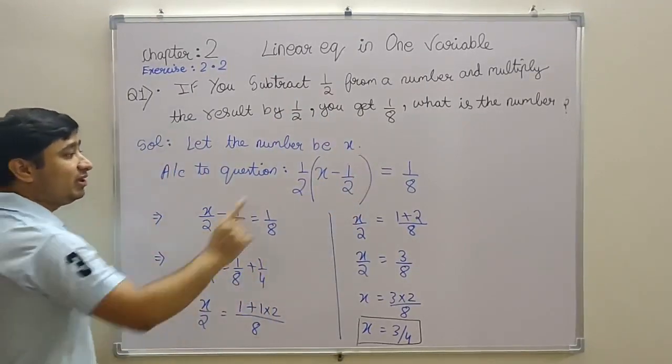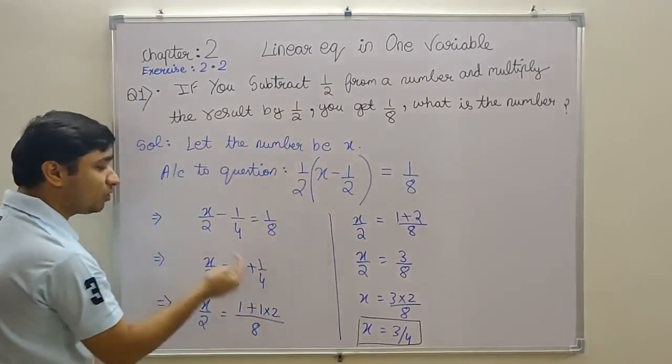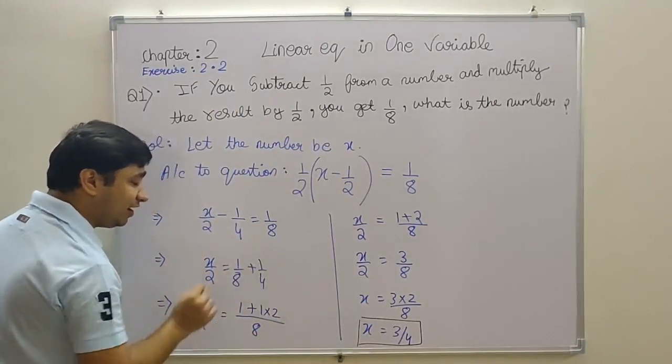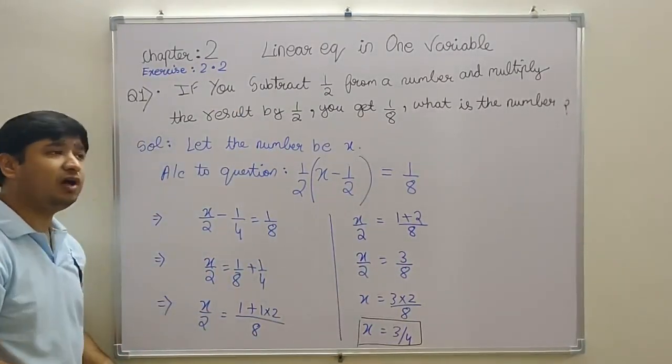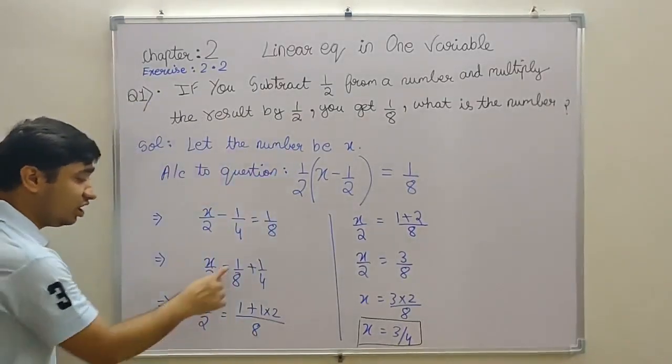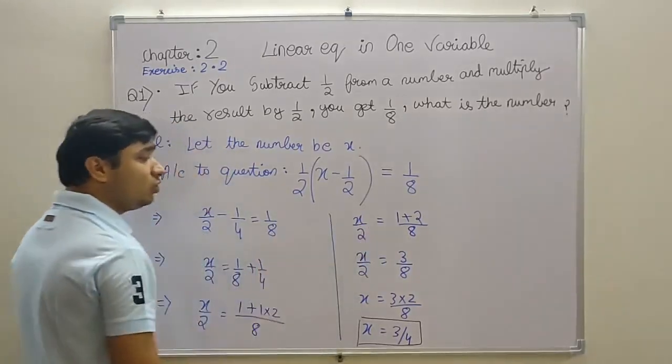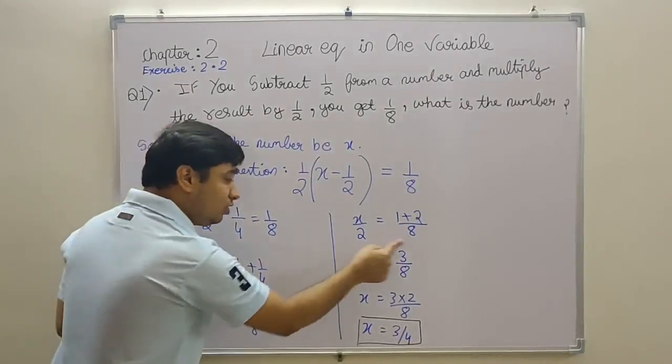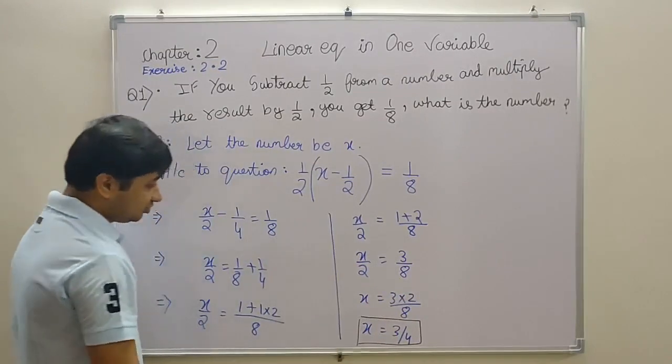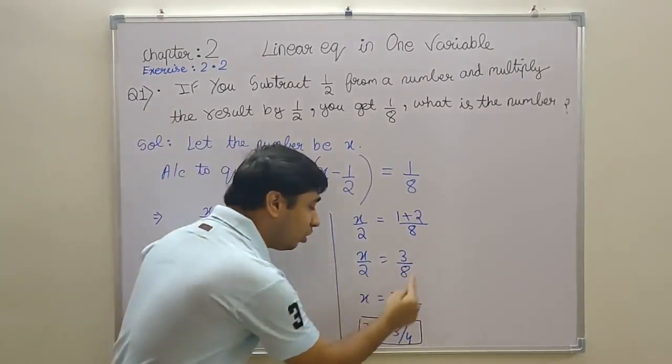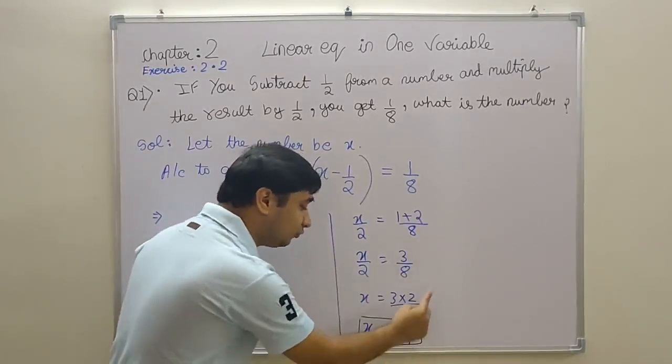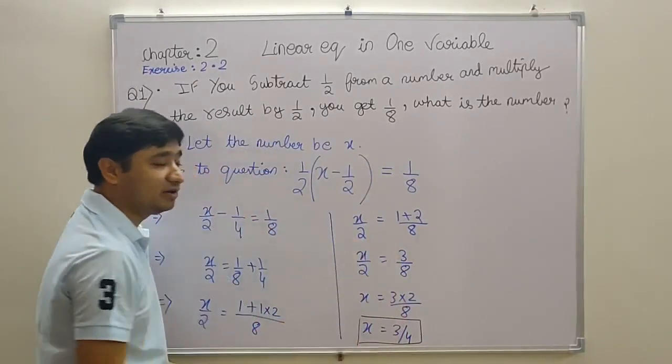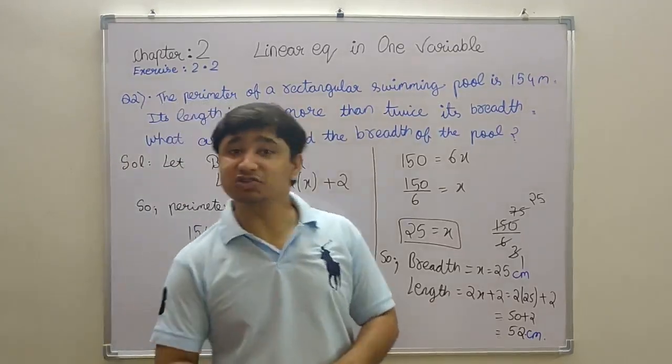So (1/2) multiply by x gives x/2, (1/2) multiply by (1/2) that is minus 1/4, equals 1/8. When the minus sign goes to the other side it becomes positive, so minus 1/4 goes there and becomes plus 1/4. Here we take the LCM: 1/8 plus 1/4. We get x/2 equal to (1+2)/8, that is 3/8. Now cross multiply: 2 goes there and multiplies, 3 times 2 divided by 8. You can simplify: 2 into 1 is 2, 4 into 2. Here x equals 3/4. This is my number, 3/4.